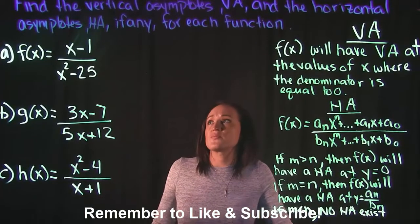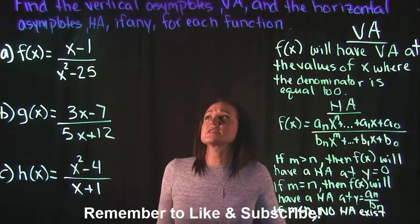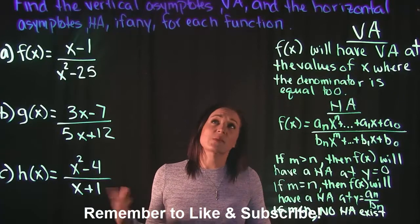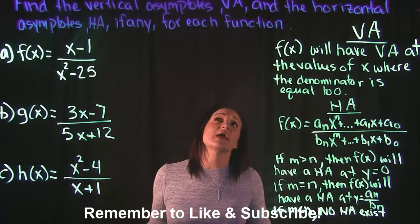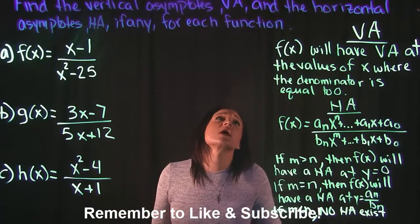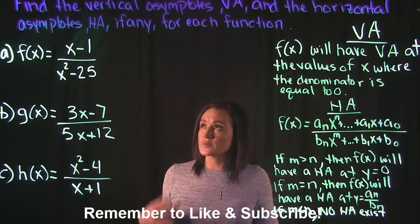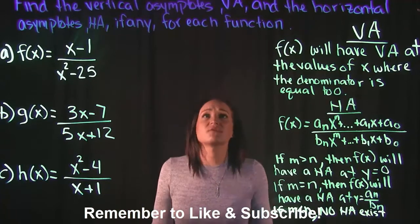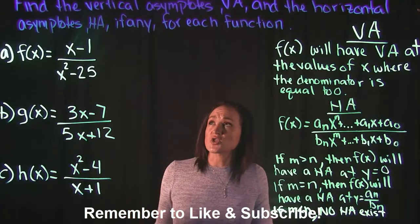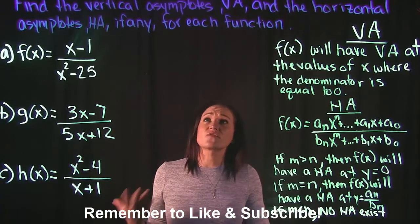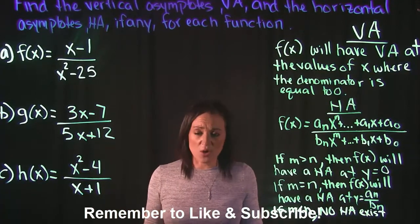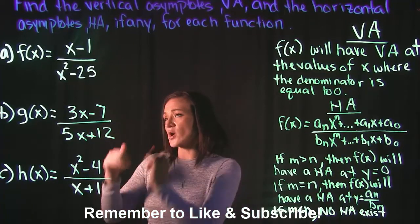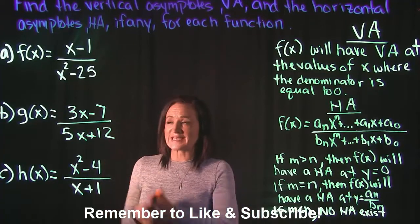For this video, our instructions say find the vertical asymptotes, represented by VA for short, and the horizontal asymptotes, HA, if any, for each function. So we're going to work through three examples.